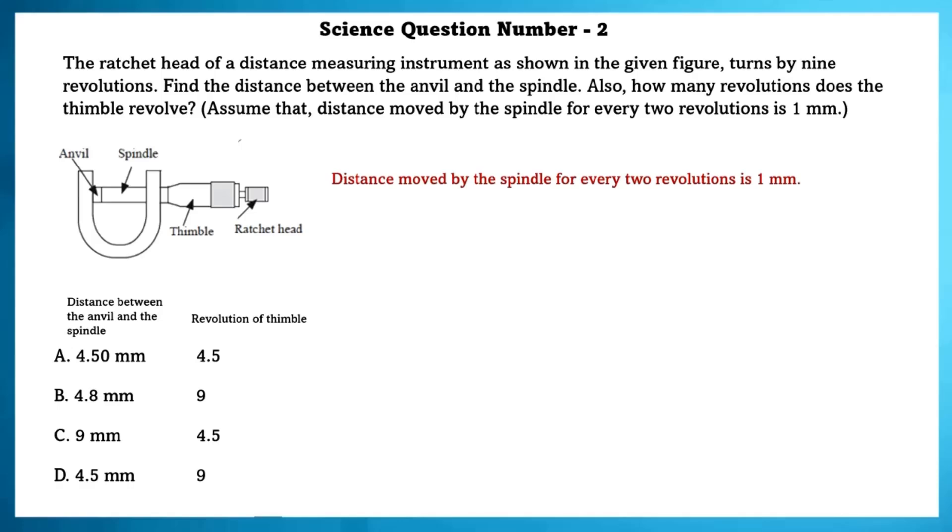Distance moved by the spindle for every two revolutions is 1 mm. Distance moved by the spindle for 1 revolution is 1 mm divided by 2, i.e. 0.5 mm. Distance covered by the spindle for 9 revolutions of ratchet head is equal to 0.5 times 9, i.e. 4.5 mm.